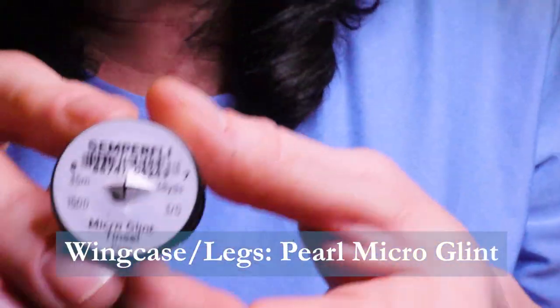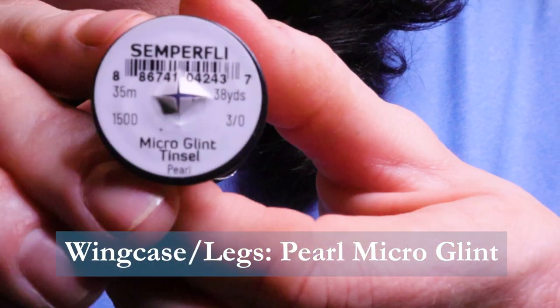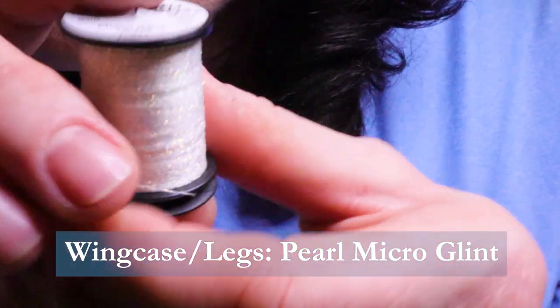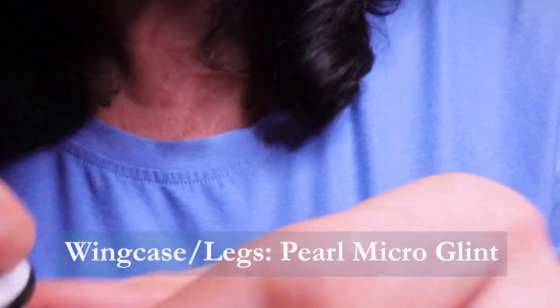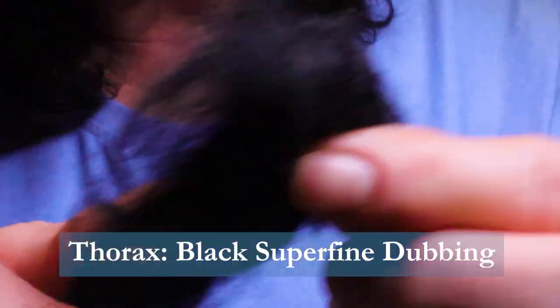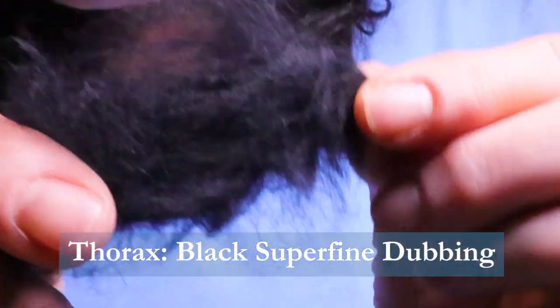For the wing case and legs I'm using Semperfly Microglint Tinsel in pearl. And for the thorax I'm using Semperfly Superfine Dubbing in black.